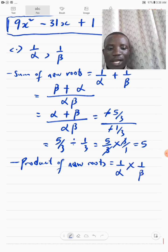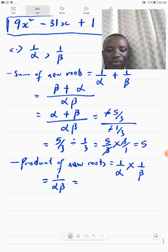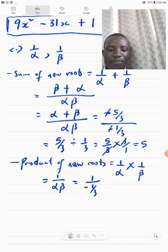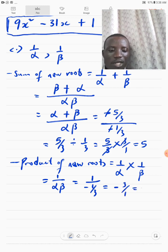Which will be 1 over alpha times 1 over beta. So, products means that we are multiplying it. And if we should multiply that, that will give me 1 over alpha beta. That's so straightforward. That will be 1 over minus 1 over 3. Because that's our alpha beta. And that will be minus 3 over 1. And that will be minus 3.